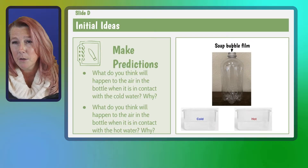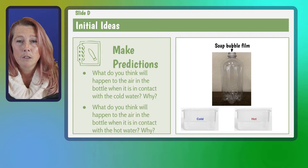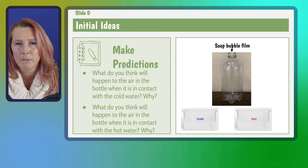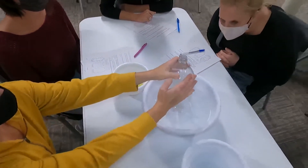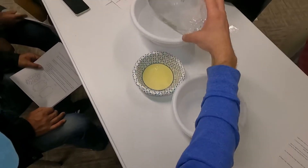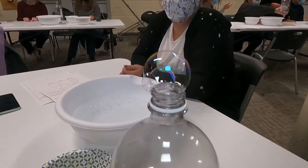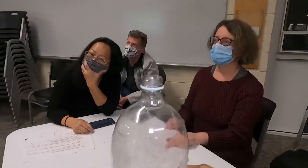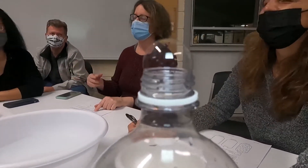Next, here is an investigation from somewhere in the middle of the unit that I had the parents do at the PTO, and it's about making predictions. Students have a bottle with a soap bubble placed over the top to hold the air inside. They put the bottle in cold water and then in hot water, and they observe what happens to the air inside by watching how the soap bubble reacts. The parents made predictions and then actually did the investigation. From this, students take the information to make models and revise their original ideas from the phenomenon.